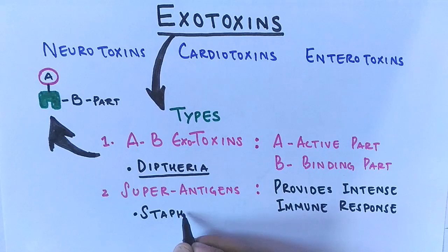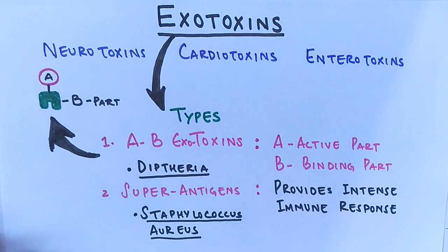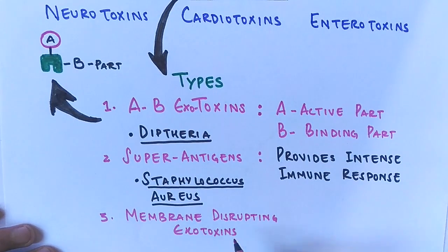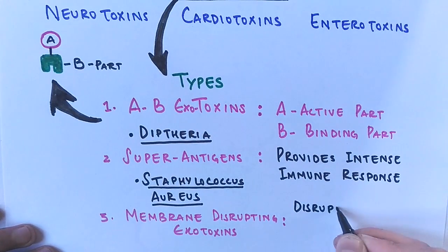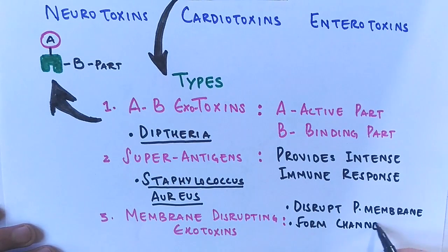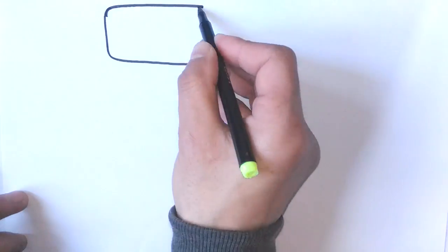A bacterium called Staphylococcus aureus produces these kinds of exotoxins. The third type are membrane disrupting exotoxins, which disrupt the structure of plasma membrane and form protein channels. These are produced by Streptococcus pneumoniae.